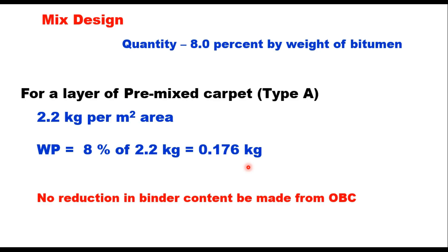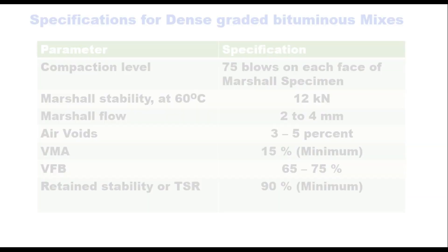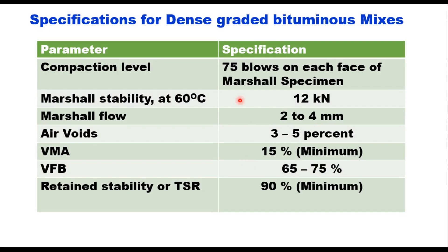For thick wearing courses like BC, the design parameters suggested in IRC SP 98 are: compaction level of 75 blows on each face of the Marshall specimen; stability at 60°C should be 12 kN; Marshall flow 2 to 4 mm; air voids 3 to 5 percent; VMA 15 percent; VFB 65 to 75 percent; and retained stability or tensile strength ratio minimum 90 percent. These are the requirements of the mix. That is how we design a bituminous mix using waste plastic. Thank you very much for watching this video; if you have any questions, you can write in the comments.